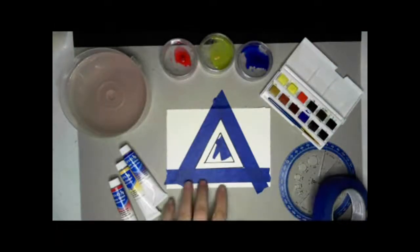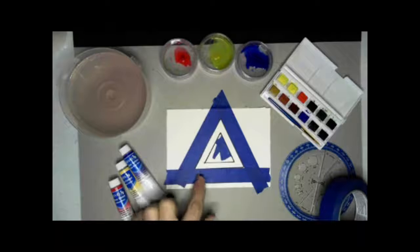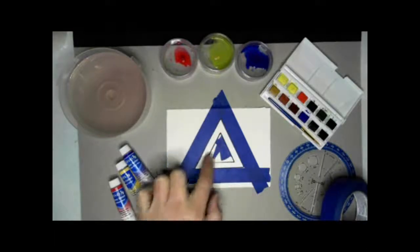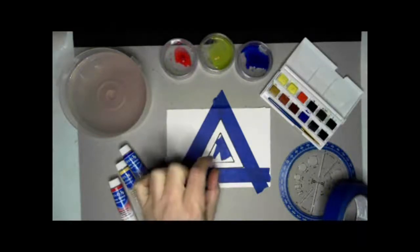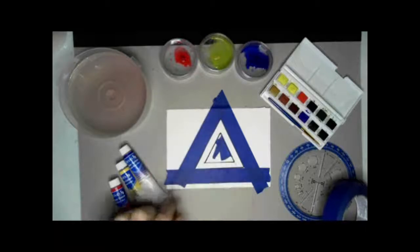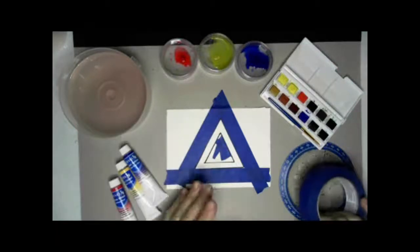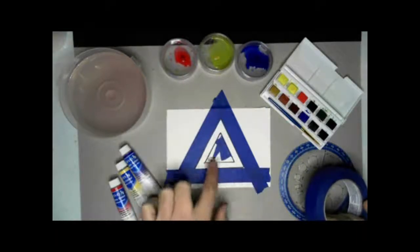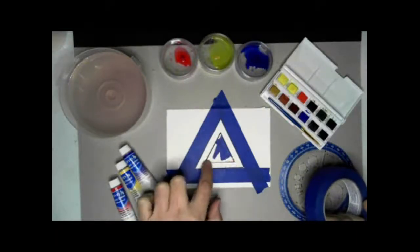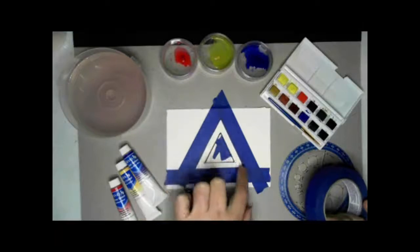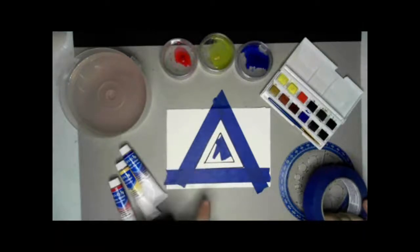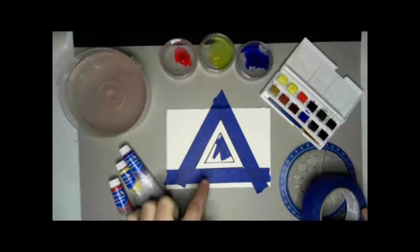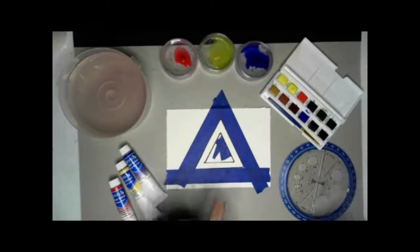So why don't you do that? Get some paper, draw a triangle. Remember, one outside triangle, a smaller one inside. Give yourself a little bit of room there. And then get some tape. You can use plain old masking tape. Go ahead and do all the way around the outside and completely fill in the inside and leave yourself this nice white channel here. And I'm going to go ahead and finish. And by the time I'm done, we'll be ready to go.